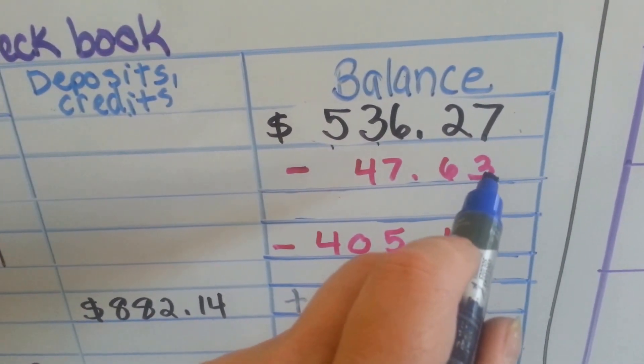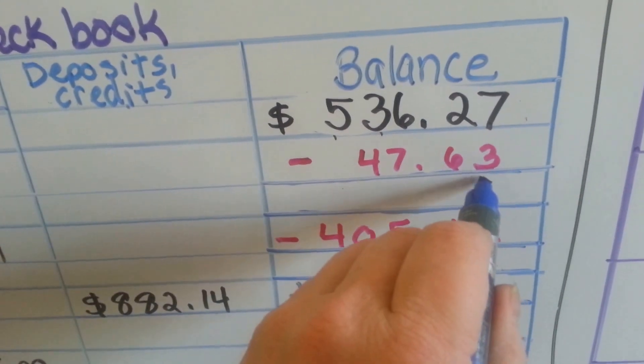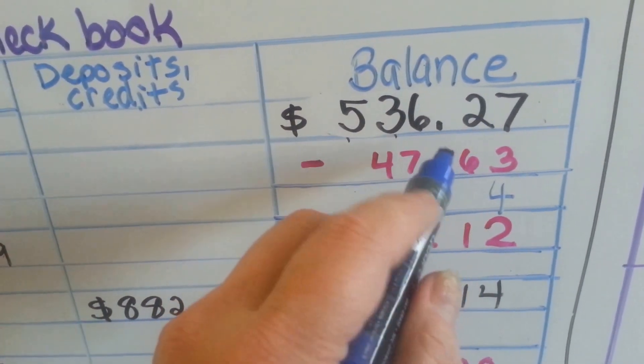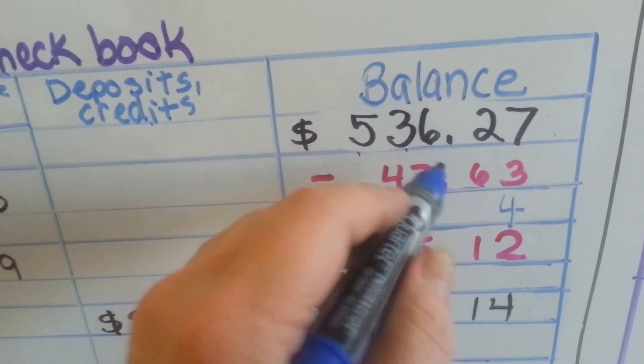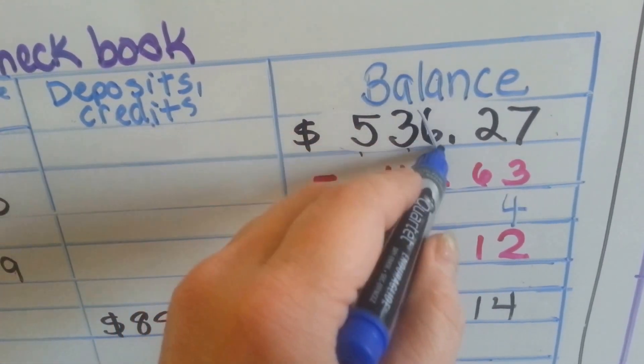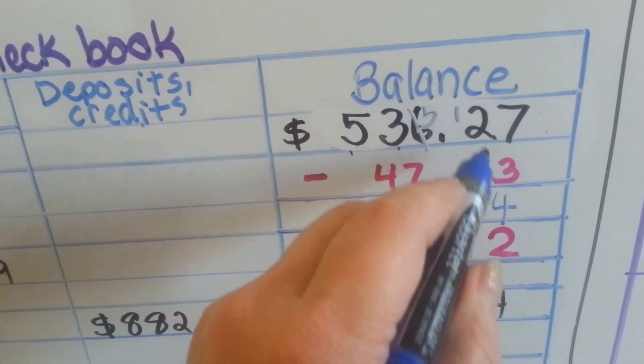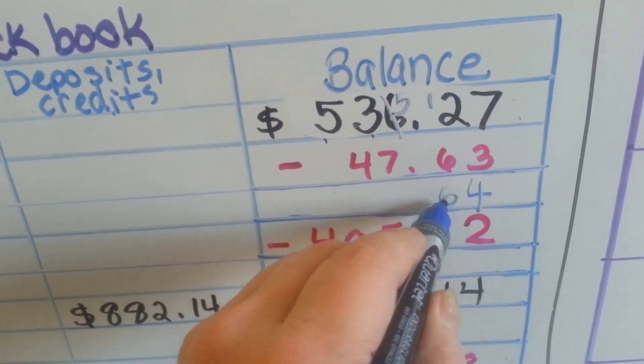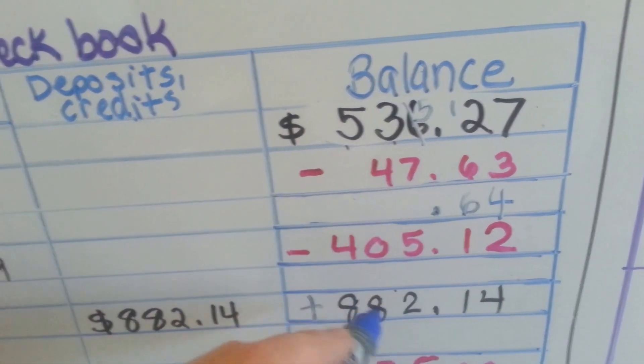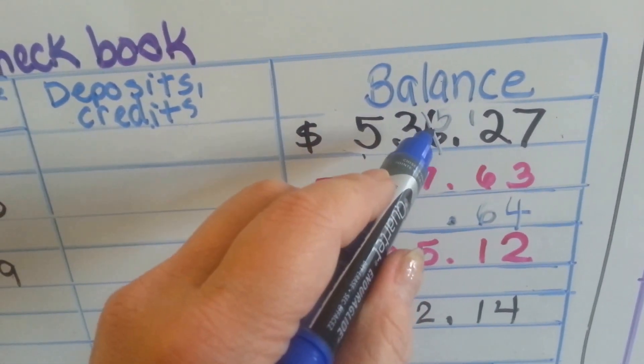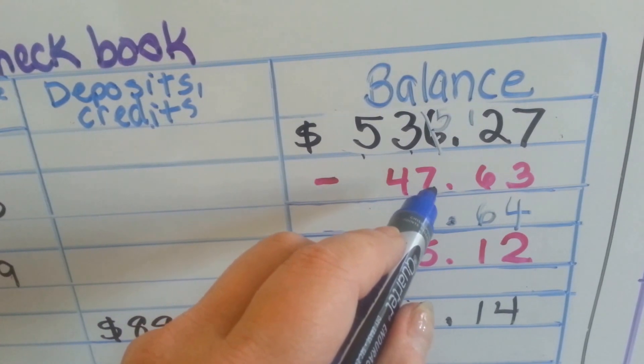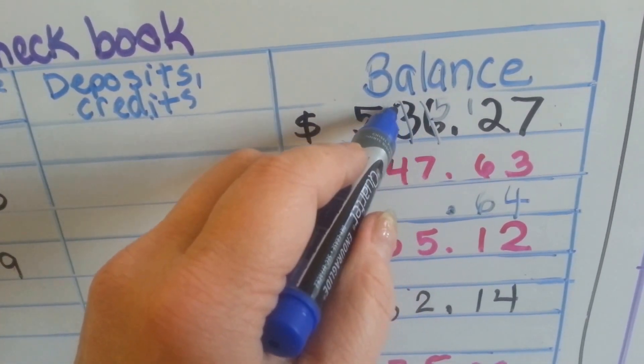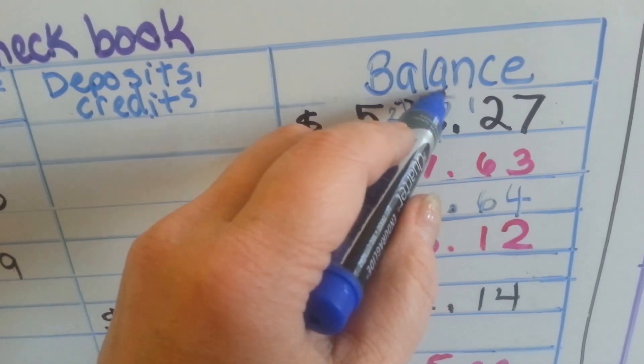The first thing we've got is 3 from 7, that's 4. And then 2 take away 6, we can't do it, so we have to borrow from the 6. It becomes a 5. And that becomes a 12. 12 take away 6 is 6. We put our decimal point. Now, this is a 5, but we need to take 7 away. So we need to borrow it from the 3. The 3 becomes a 2. The 5 becomes a 15. 15 take away 7 is 8.